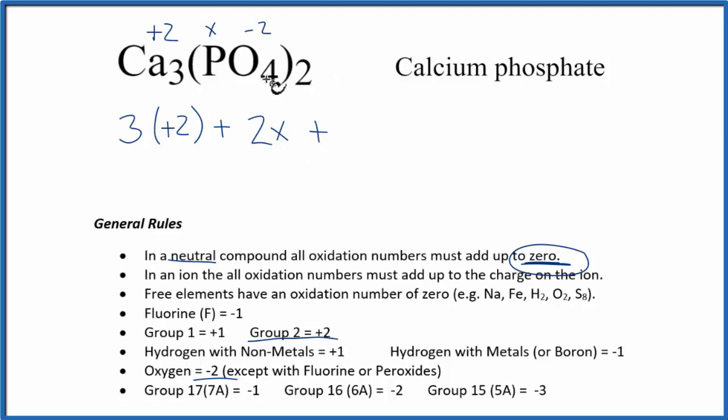Plus we have 4 times 2. So 2 times 4 is 8 total oxygen atoms. And each oxygen atom has an oxidation number of minus 2. And we said all of that equals zero.